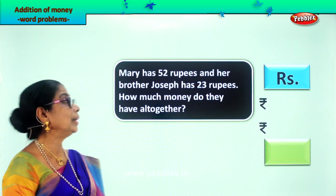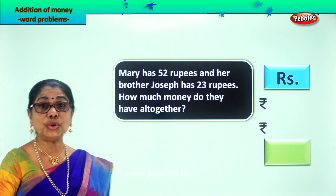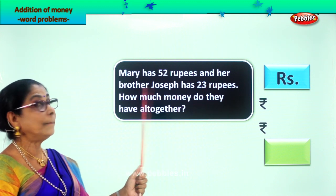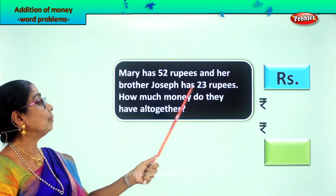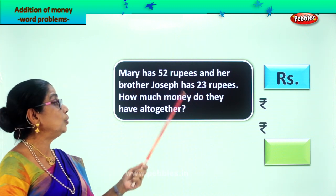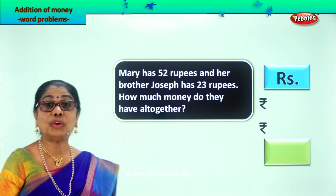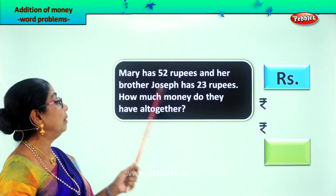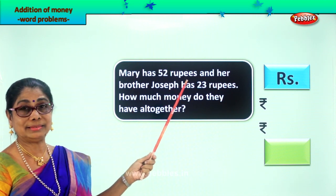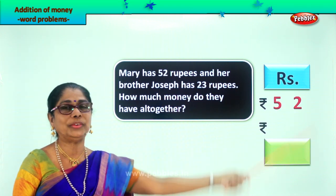Let's take another word problem. Mary has 52 rupees and her brother Joseph has 23 rupees. How much money do they have altogether? Both Mary and Joseph together — how much do they have? Amount Mary has: rupees 52, so we write it here.